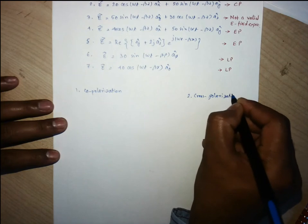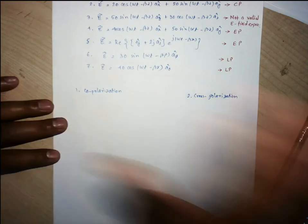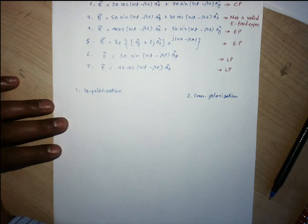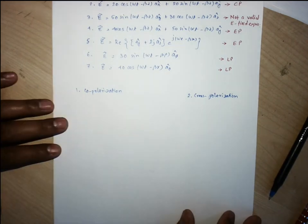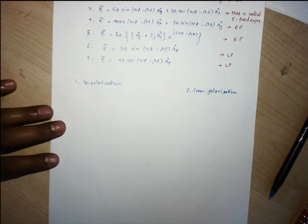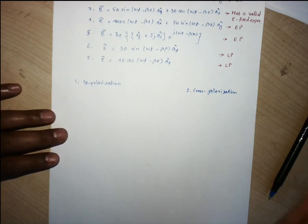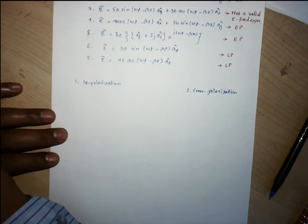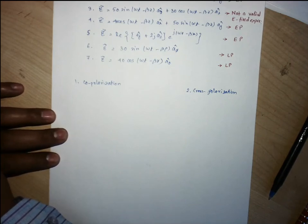Copolarization means the antennas share the same orientation. Cross polarization means they have different orientations. When polarization matching occurs, maximum reception is possible. When there is a polarization mismatch, reception is minimum.